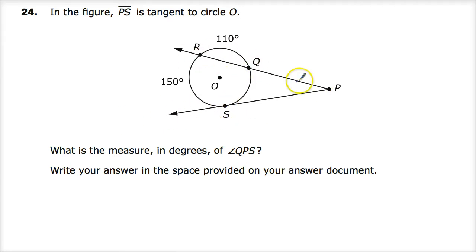This one that does twice is a secant, incidentally enough, so RP or RQ is a secant. They want to know what the measure in degrees of angle QPS happens to be, so write your answer in the place provided.